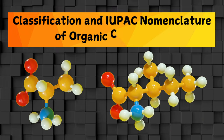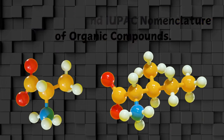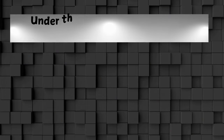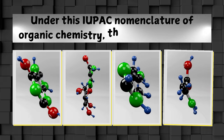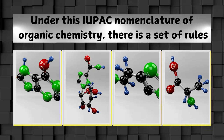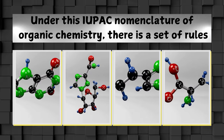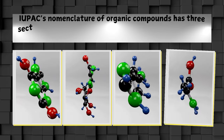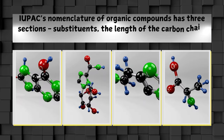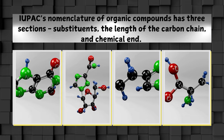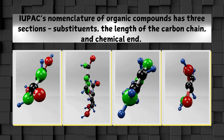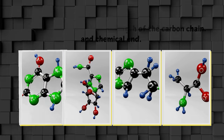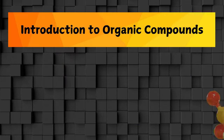Classification and IUPAC nomenclature of organic compounds. Under IUPAC nomenclature of organic chemistry, there is a set of rules. IUPAC's nomenclature of organic compounds has three sections: substituents, the length of the carbon chain, and chemical functional groups.